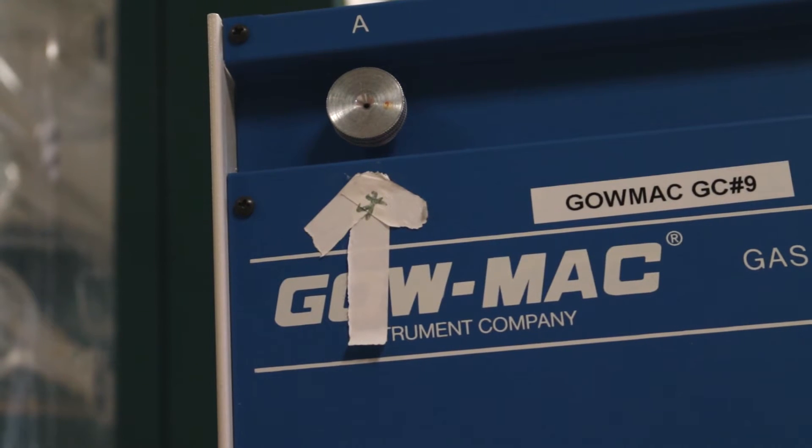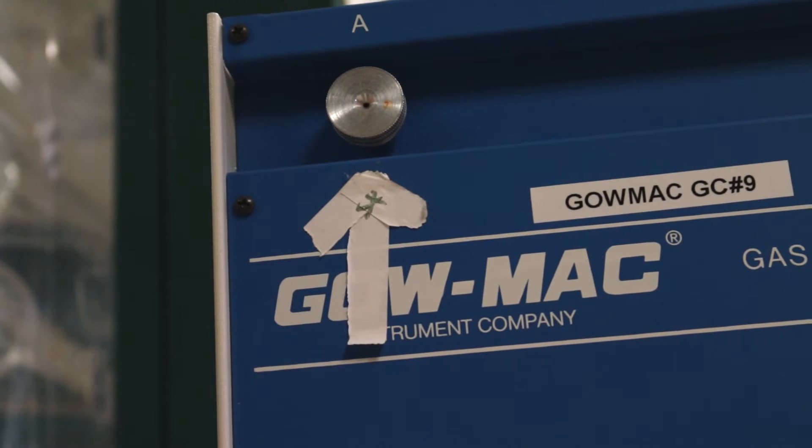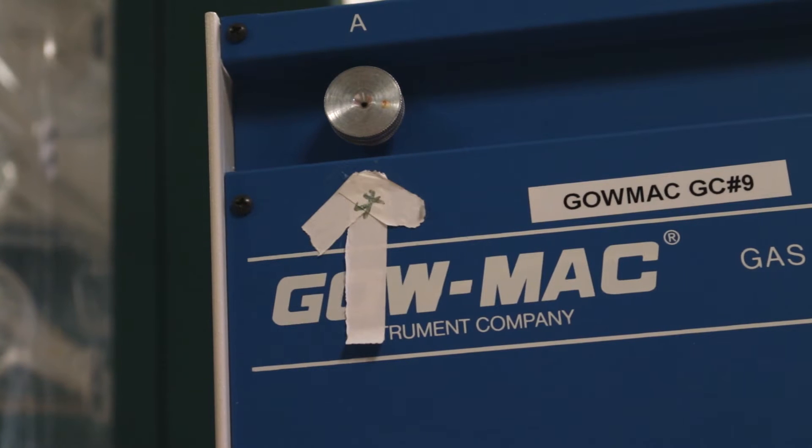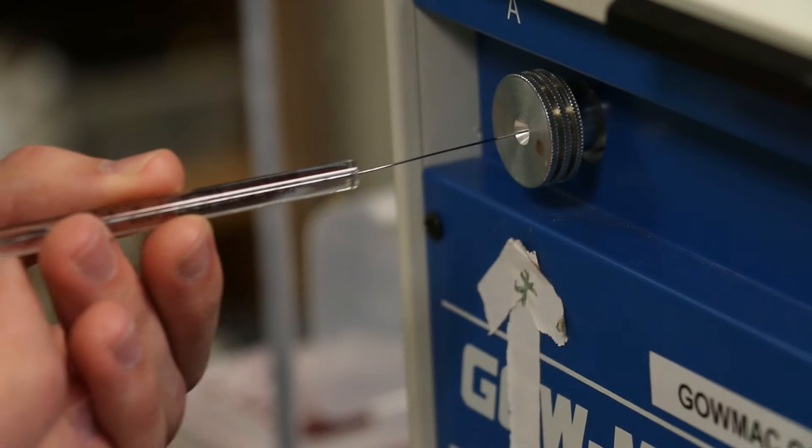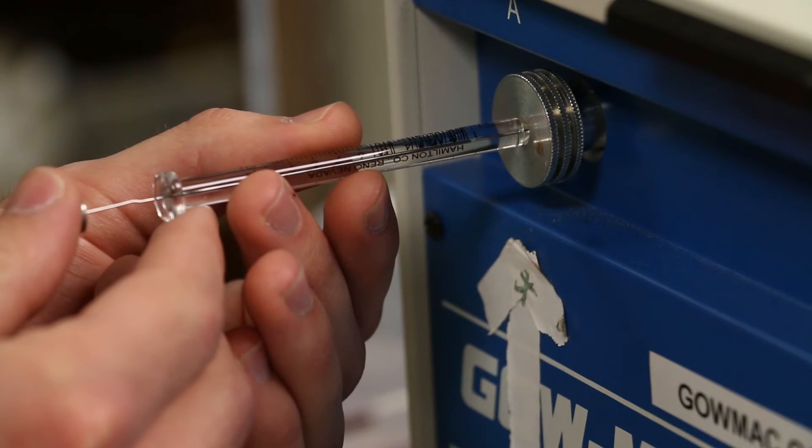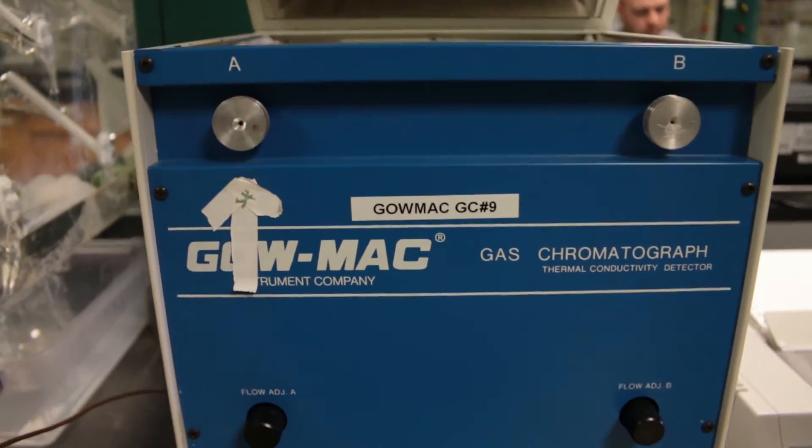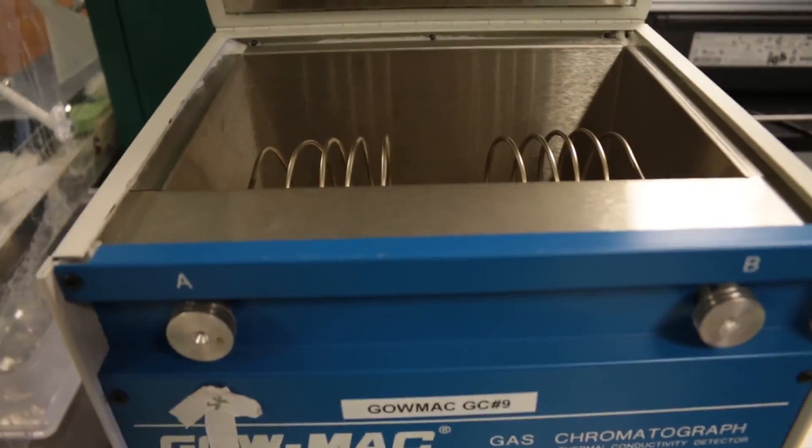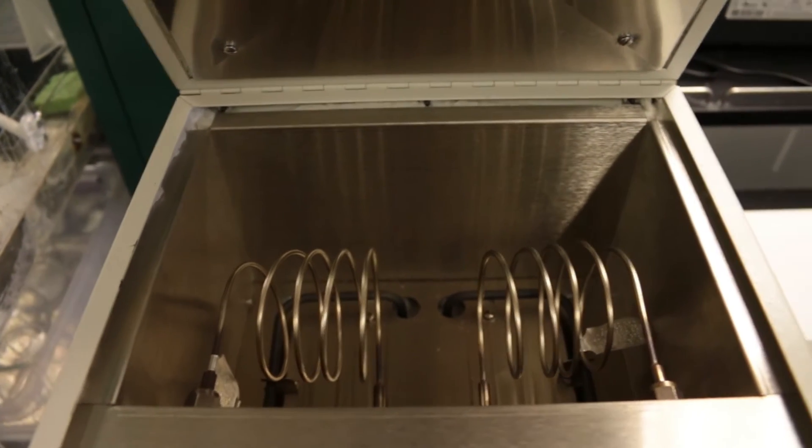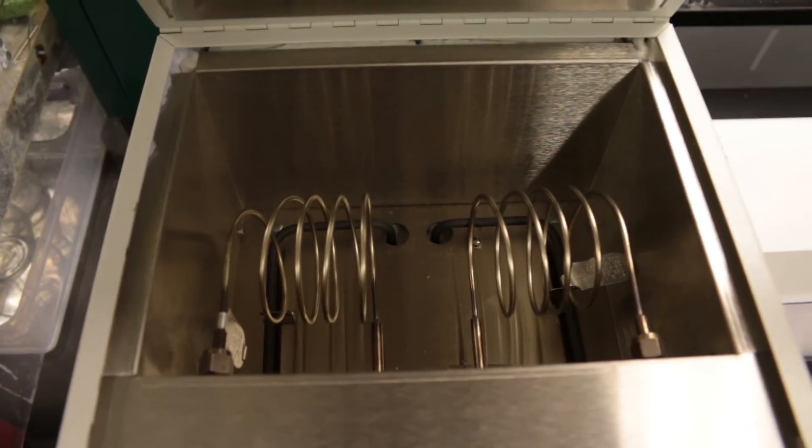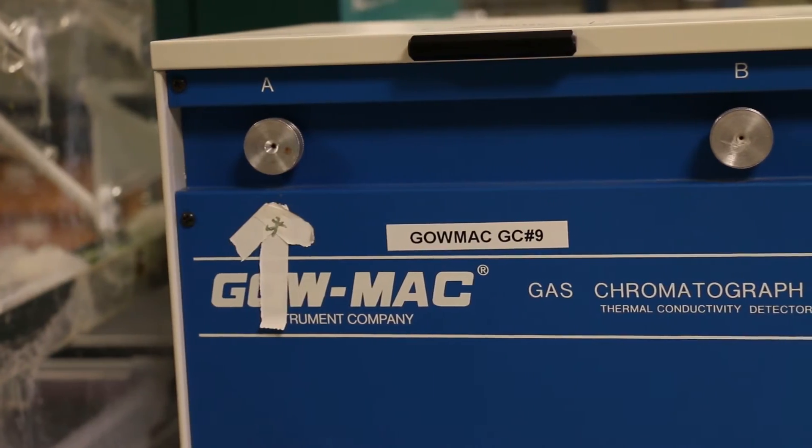The injection port contains a rubber septum that the syringe needle must pierce to get onto the column. So expect resistance as you push the needle through the septum during an injection. Each GC has two injection ports and two columns containing different stationary phases. You should inject in the port indicated with an arrow on the machine.